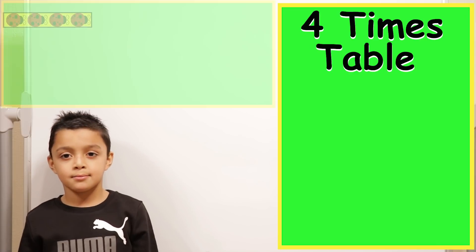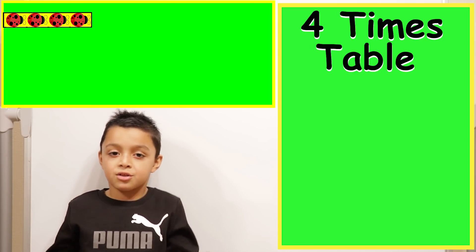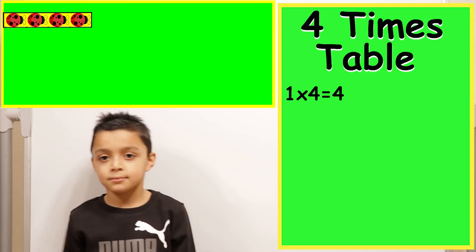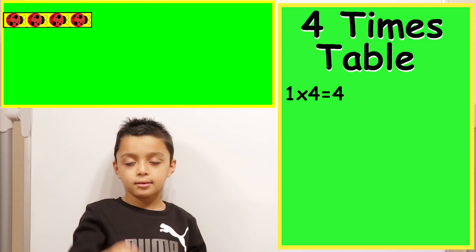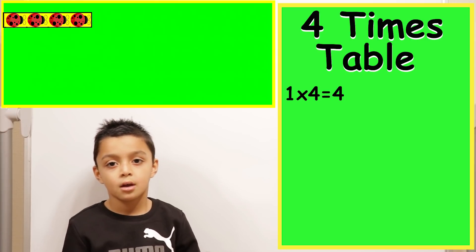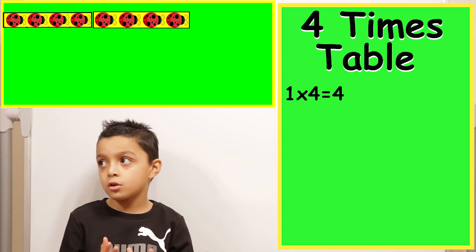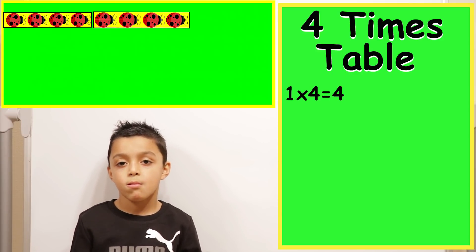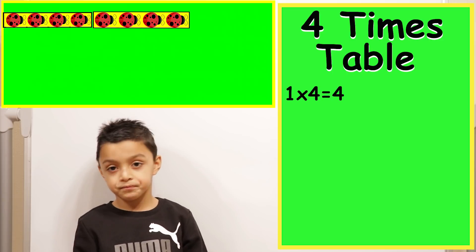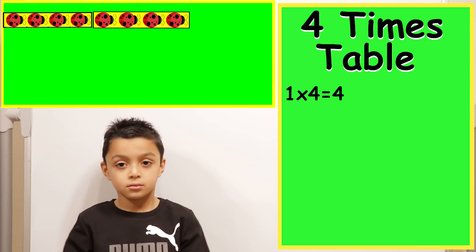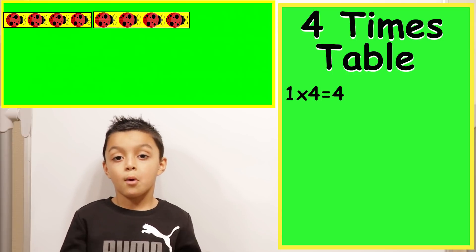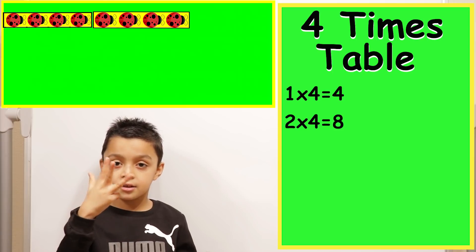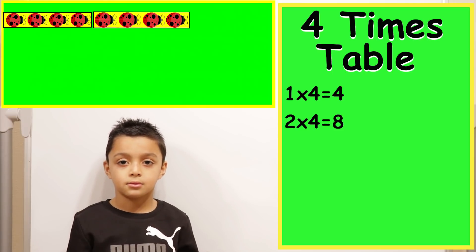So we're going to start with one times four. It's just one little four, so it equals only four. One times four equals four. Now, can you explain how we would work out two times four? You will add four onto four because it's double four, two lots of four. Okay, so we can say double four or two lots of four, two times four.